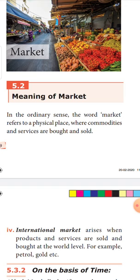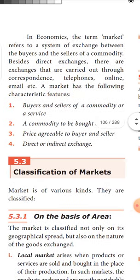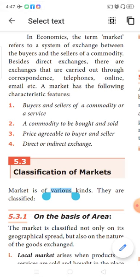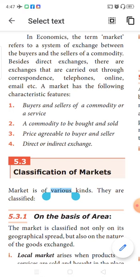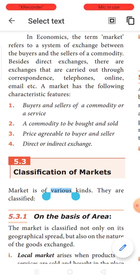As a buyer I go to the market and buy the commodity, and as a seller the shopkeeper sells the commodities. Buying and selling is made for a price — nothing is free of cost. In economics, market means it is a system of exchange between the buyer and the seller of the commodity. There can be direct exchange, or exchange can happen through correspondence like telephone, online, or email. Even without the buyer and seller meeting each other, exchange can take place — that is also called a market. Nowadays we call it e-market; online shopping apps are also called market.